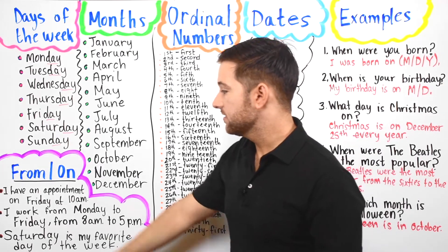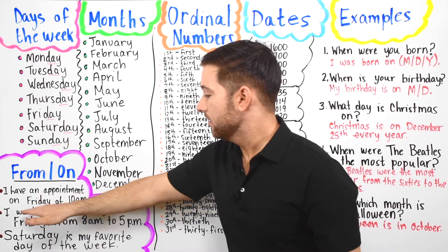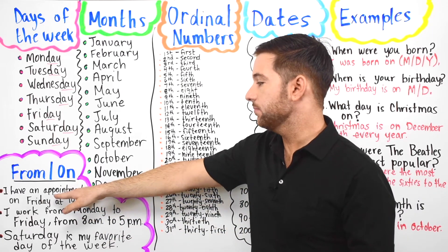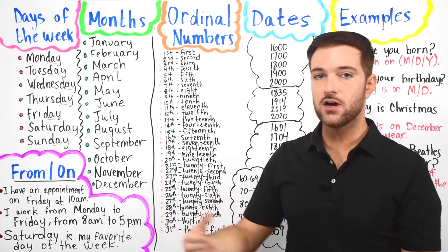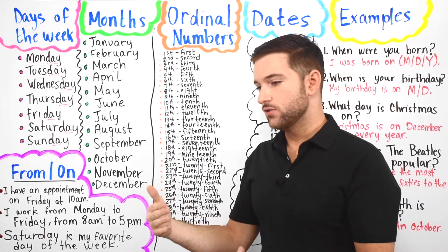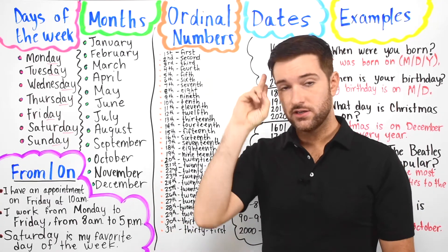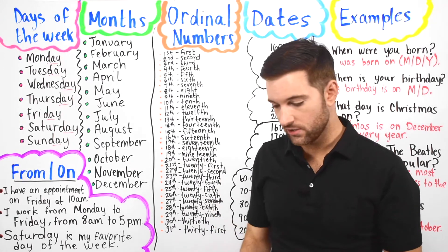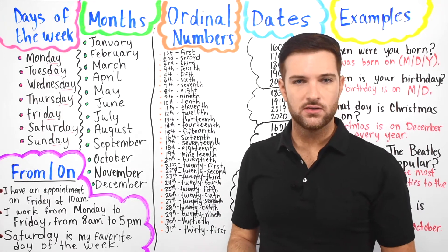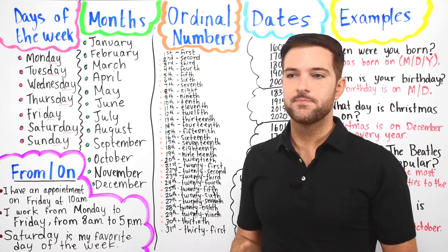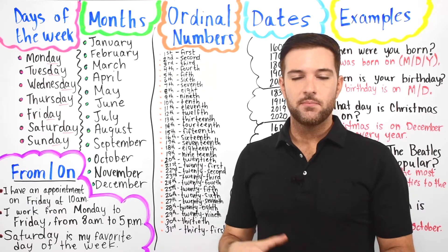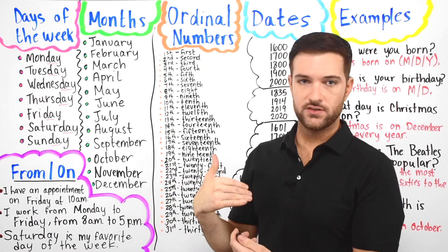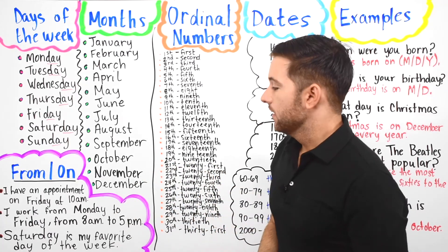For example, you can say: I have an appointment on Friday at 10 a.m. An appointment can be to go see the doctor, go to the mechanic, cut your hair, go to the nail salon — anything you want. An appointment is a moment in time when you go to meet with somebody who provides you a service.